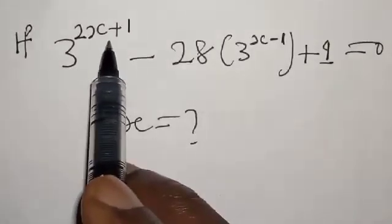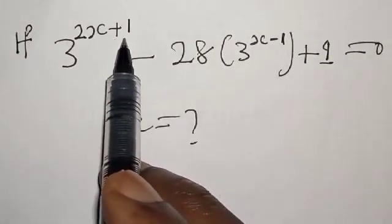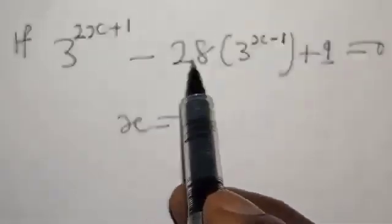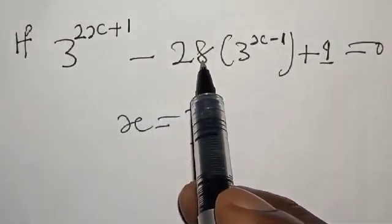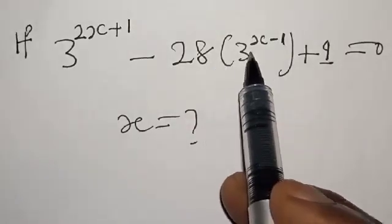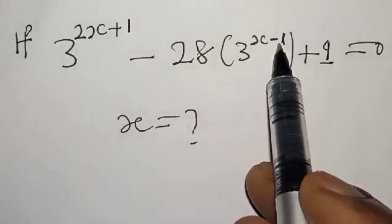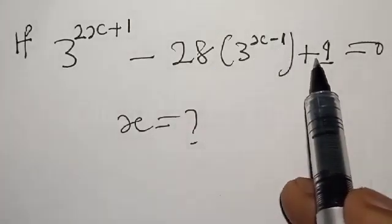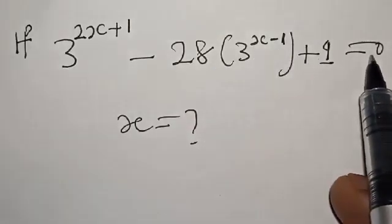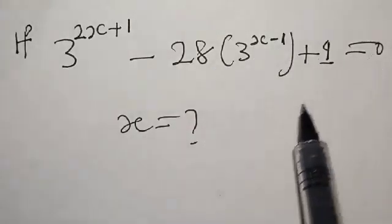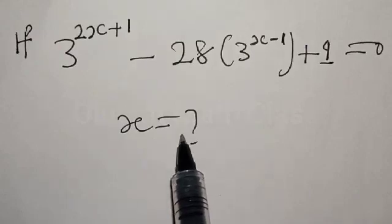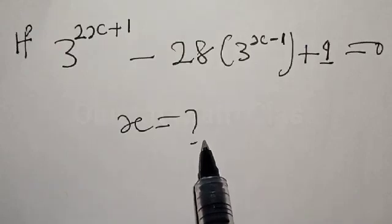If 3 raised to the power 2x plus 1, minus 28 into 3 raised to the power x, minus 1, plus 1 is equal to 0, then x is equal to what?